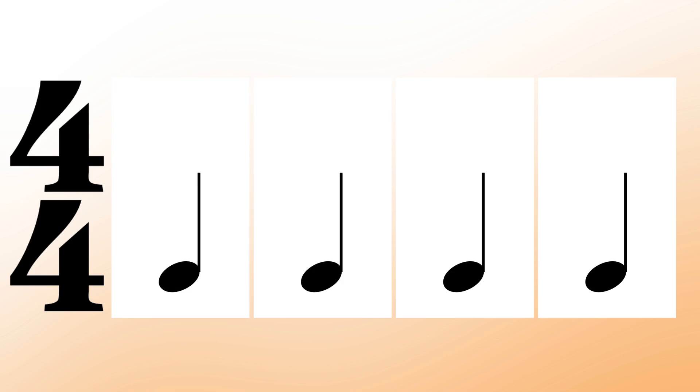Let's use the 4/4 time signature first as an example. We know that there are four beats per measure and the quarter note gets one beat. For demonstration purposes, we will show one 4/4 measure like this — each of those boxes represents one beat. Since the quarter note is worth one beat, we can assign one quarter note per box or per beat. We count their place in time, so we can count this rhythm: one, two, three, four.